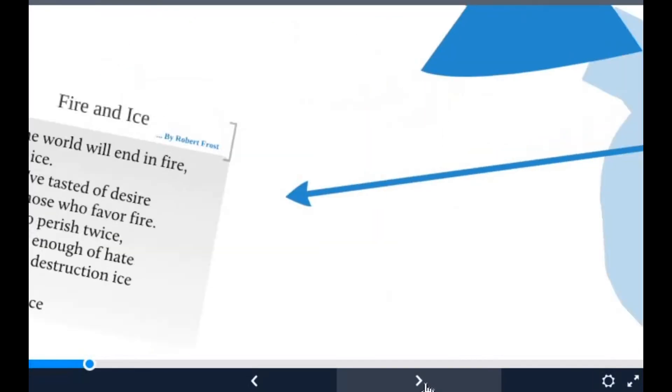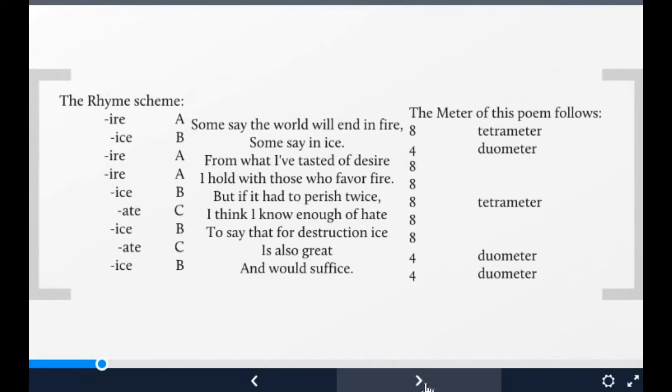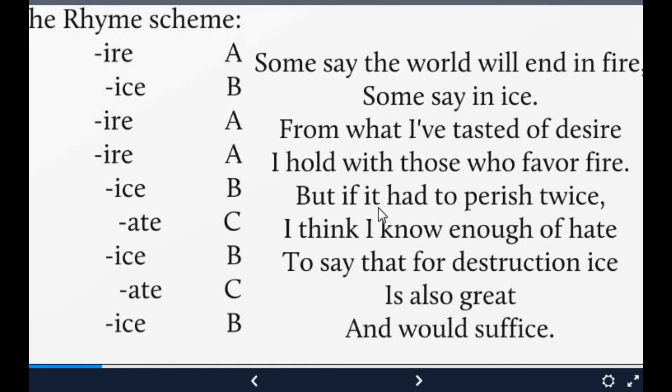Now first I want you to focus on the rhyme scheme of the poem, which is quite inconsistent. The first line ends with fire, so it is A-B-A-A: fire, desire, fire. Then there is ice, twice, so B-B. Then there is hate, so A-T-E, and then great, which is A-eight sound. So it is marked A-B-A-A-B-C-B-C-B.